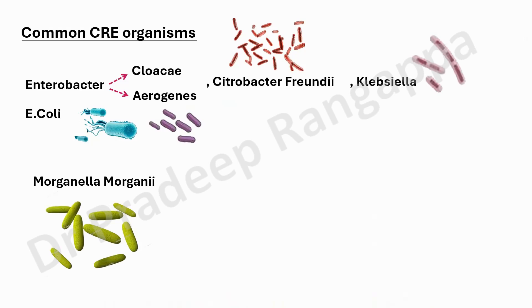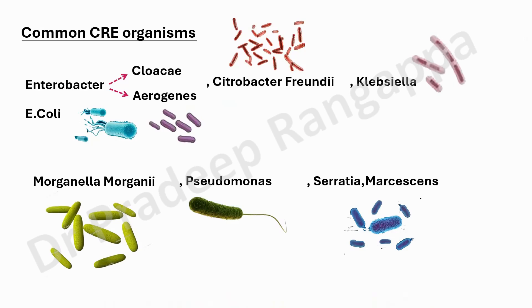Morganella morganii we tend to see more in deconditioned or decompensated patients who have been in the ICU for a very long time. Pseudomonas we tend to see typically in immunocompromised patients — at least in India, more often in patients on chemo or neutropenic patients. These organisms have a higher predilection for carbapenem resistance, and you may have to do molecular testing to identify the gene coding and choose antibiotics accordingly.